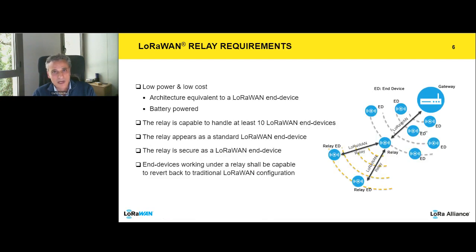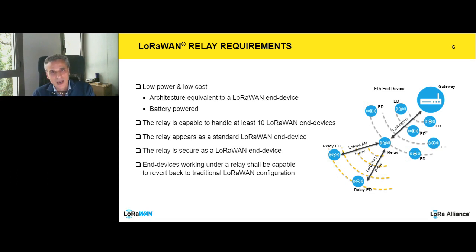Let's see what the main high-level requirements drove the relay specification. First, a relay must be low power and low cost. Low cost meant that the hardware architecture of the relay should be equivalent to that of a standard LoRaWAN end device. For low power, the Alliance envisioned a solution capable of being battery-powered and, with some fair assumptions, still capable of working for several years.